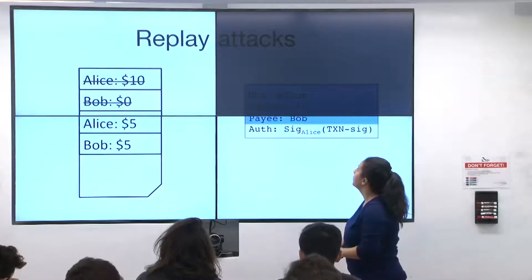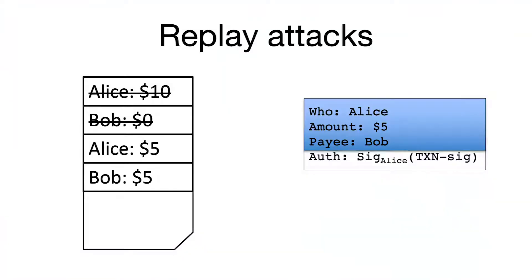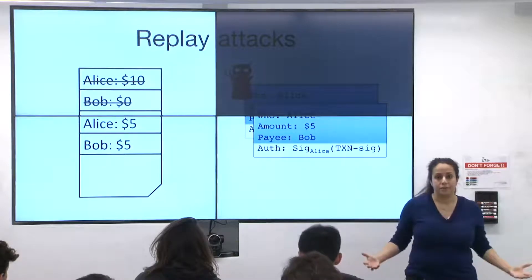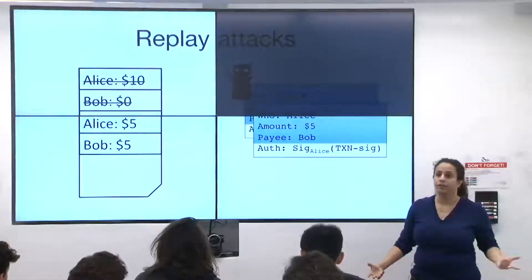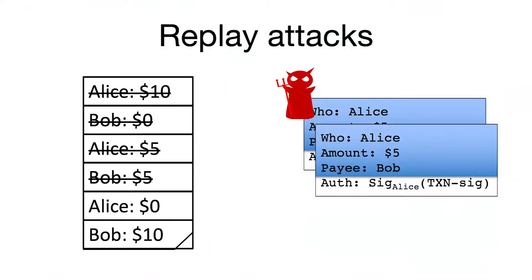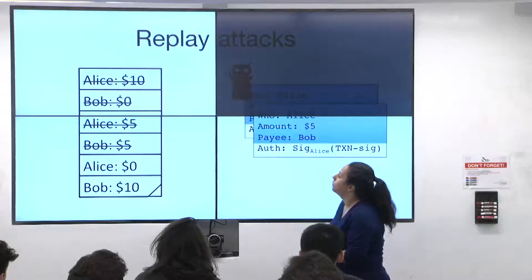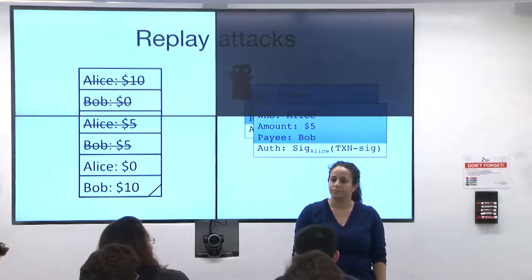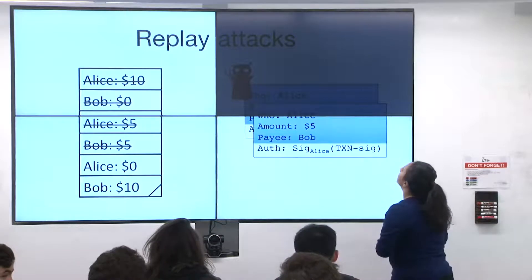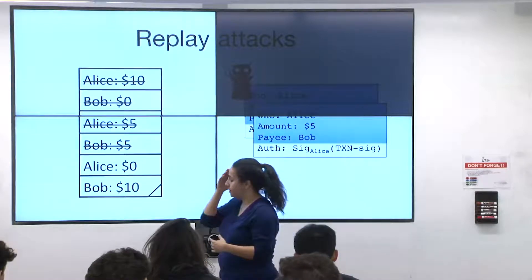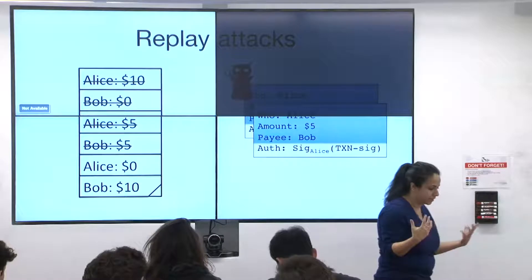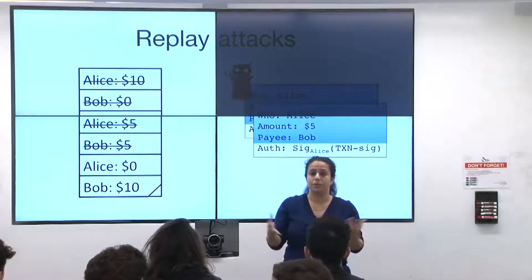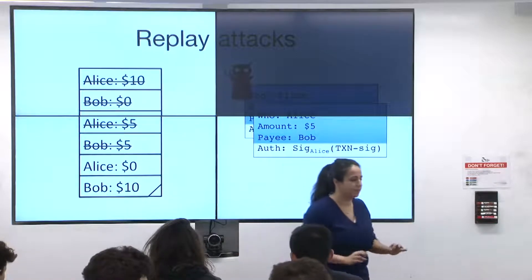Bitcoin's model was partly motivated by thinking about replay attacks. When you send a transaction to the network and it's processed, what prevents a malicious agent from rebroadcasting it again, repeatedly debiting Alice until she has no funds? One solution is adding a unique number or timestamp to the transaction — if you see the same number again, you know it's a repeat and shouldn't be processed. Ethereum does include such a nonce in every transaction.